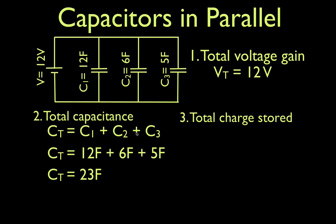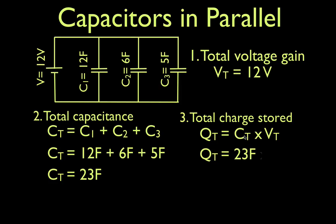Next, what is the total charge stored in this circuit? We can easily get the total charge using our capacitor equation: Q = C × V. Since we want the total charge, we use the total capacitance and the total voltage. The total charge equals 23 farads times 12 volts, which gives us 276 coulombs of charge. So that covers our first three totals: total voltage, total capacitance, and total charge.